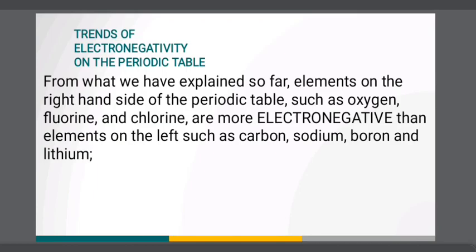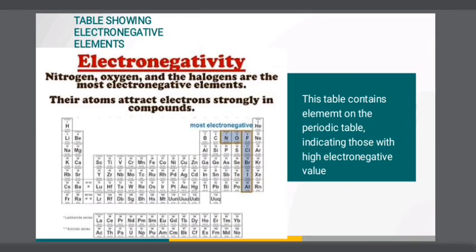From what we have explained so far, elements on the right-hand side of the periodic table, such as oxygen, fluorine, and chlorine, are more electronegative than elements on the left-hand side such as carbon, sodium, boron, and lithium.